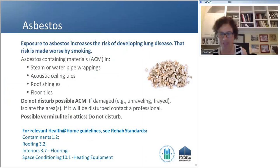Turning to asbestos — which should be familiar to most of you — this is something we worry about in terms of increasing risk of developing lung cancer, made worse if there are smokers having that exposure. We would find asbestos in a variety of materials in a building or home. The guidance is consistent with longstanding EPA policy: if it's damaged, isolate the area. If you're going to disturb it as part of, say, a heating system replacement or roofing job, contact an asbestos professional to make sure workers or residents aren't exposed. Also, vermiculite insulation in attics deserves special attention — some of it was mined from a quarry that had asbestos in it. Do not disturb it, or if you must as part of an energy job, do so in concert with an asbestos professional.